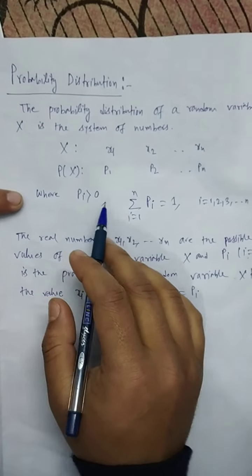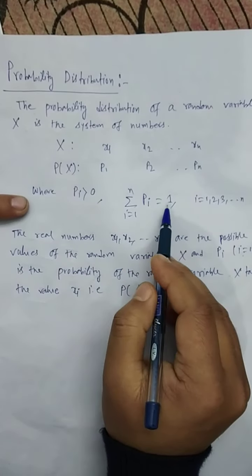Where Pi > 0, summation i equals 1 to n, Pi equals 1.